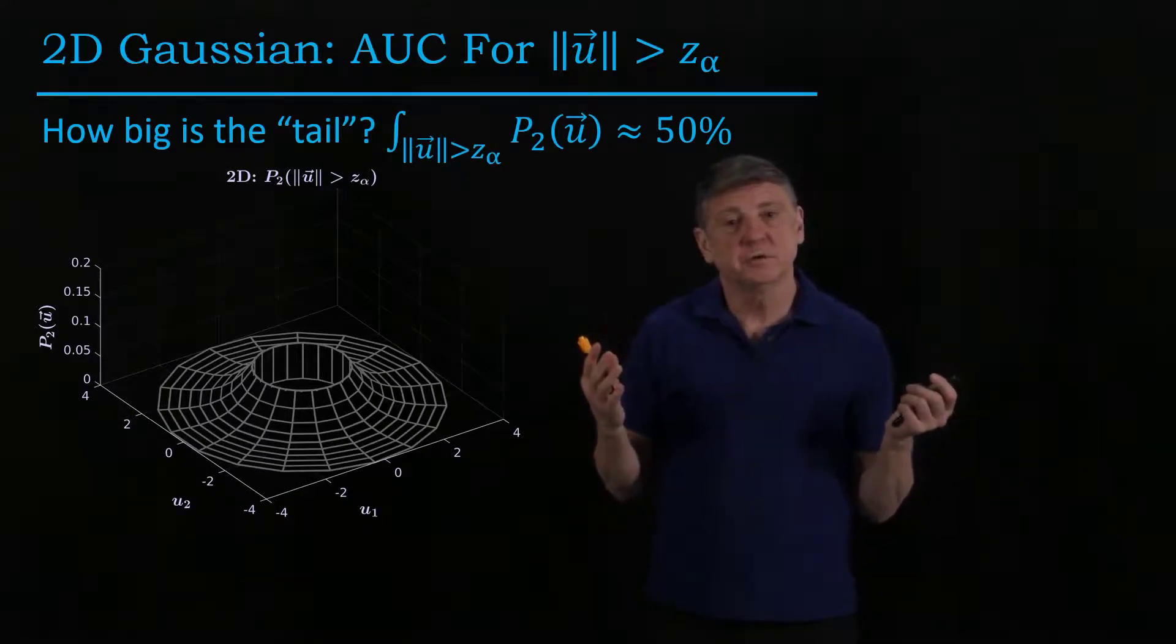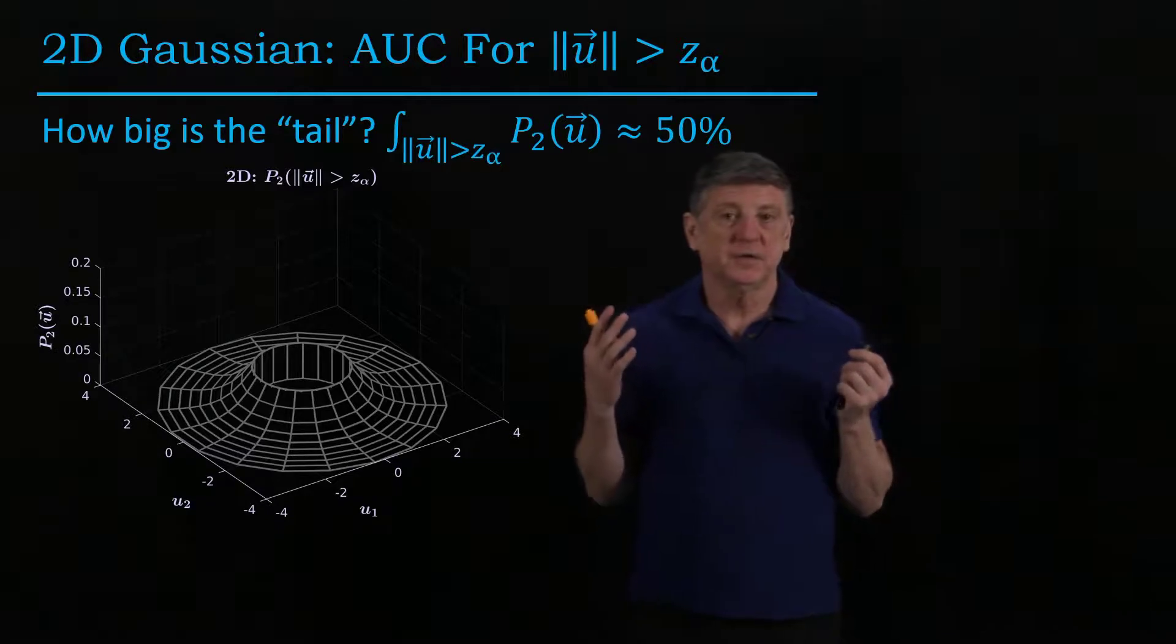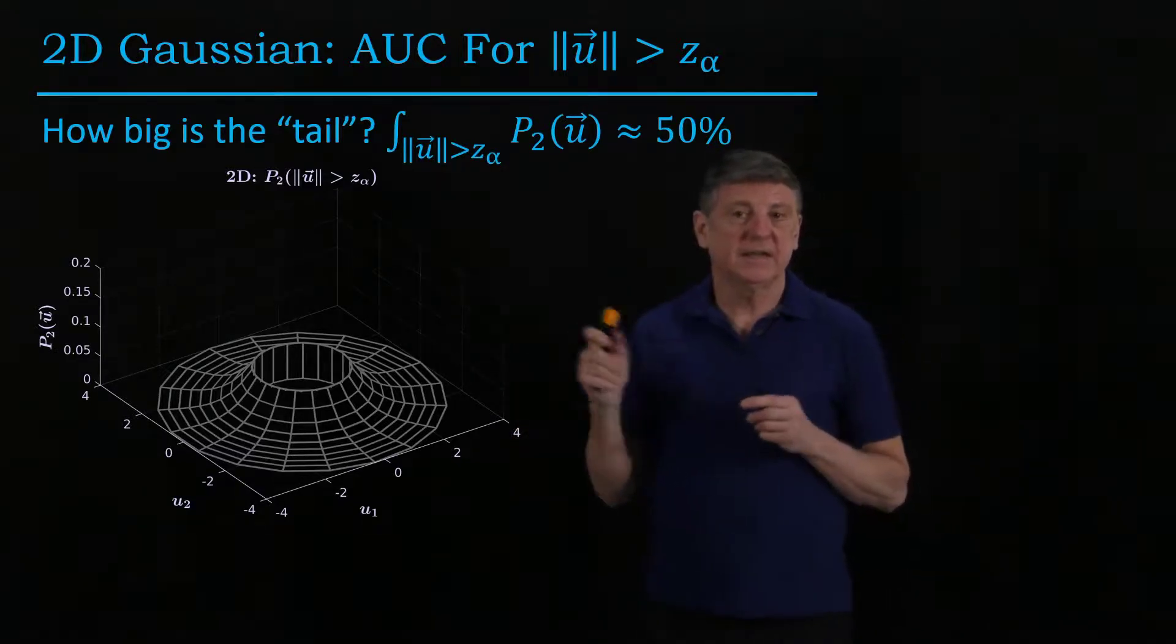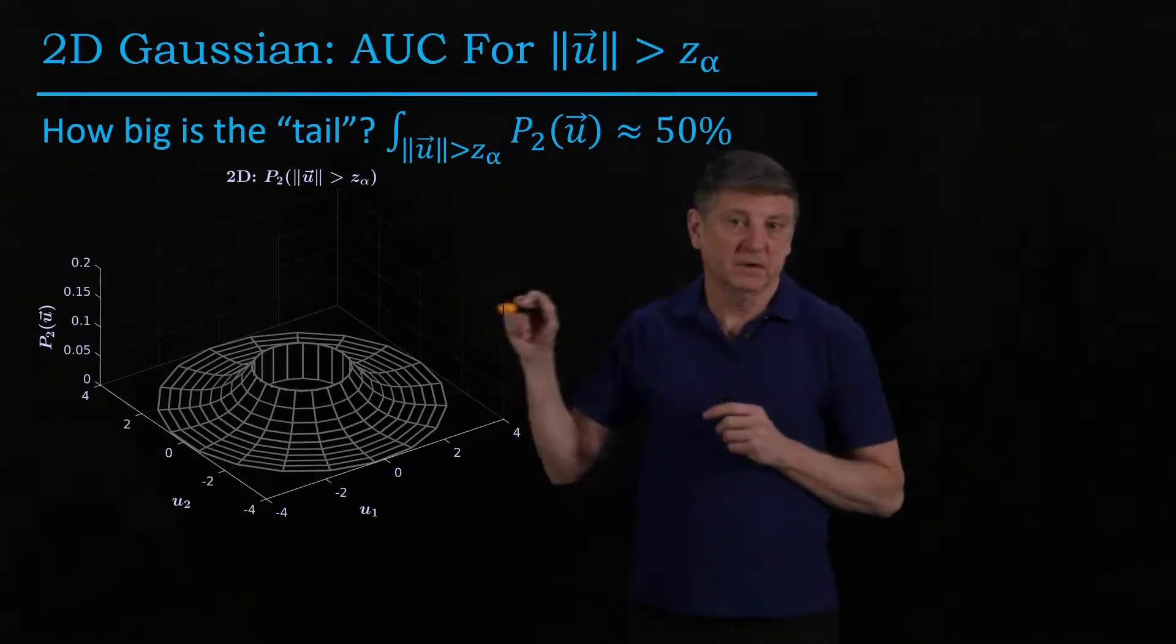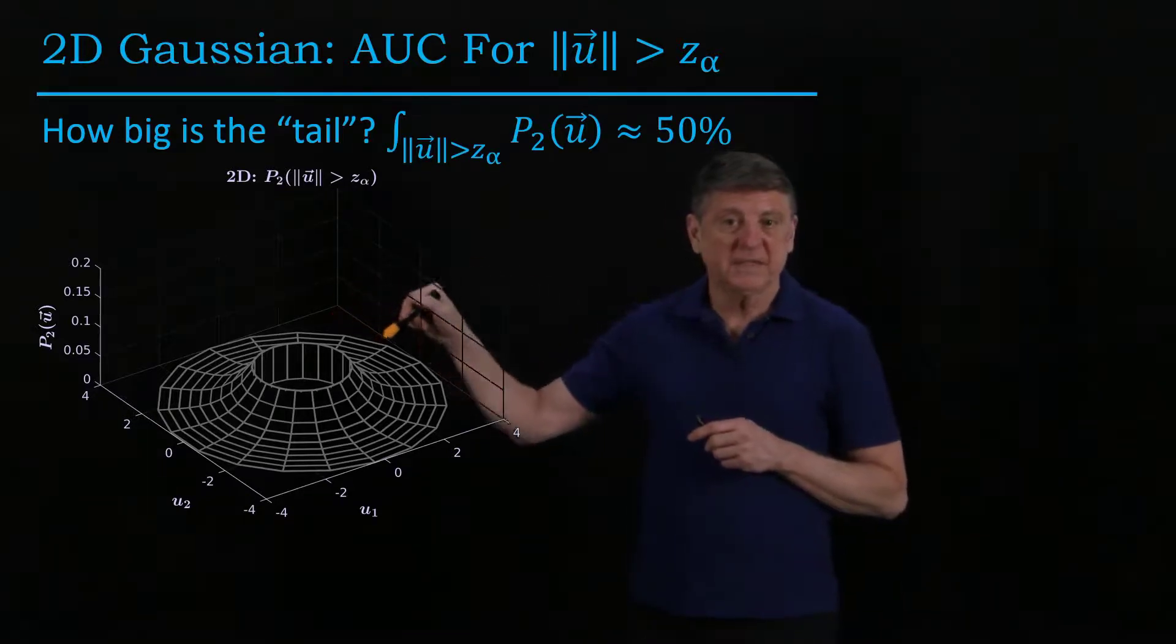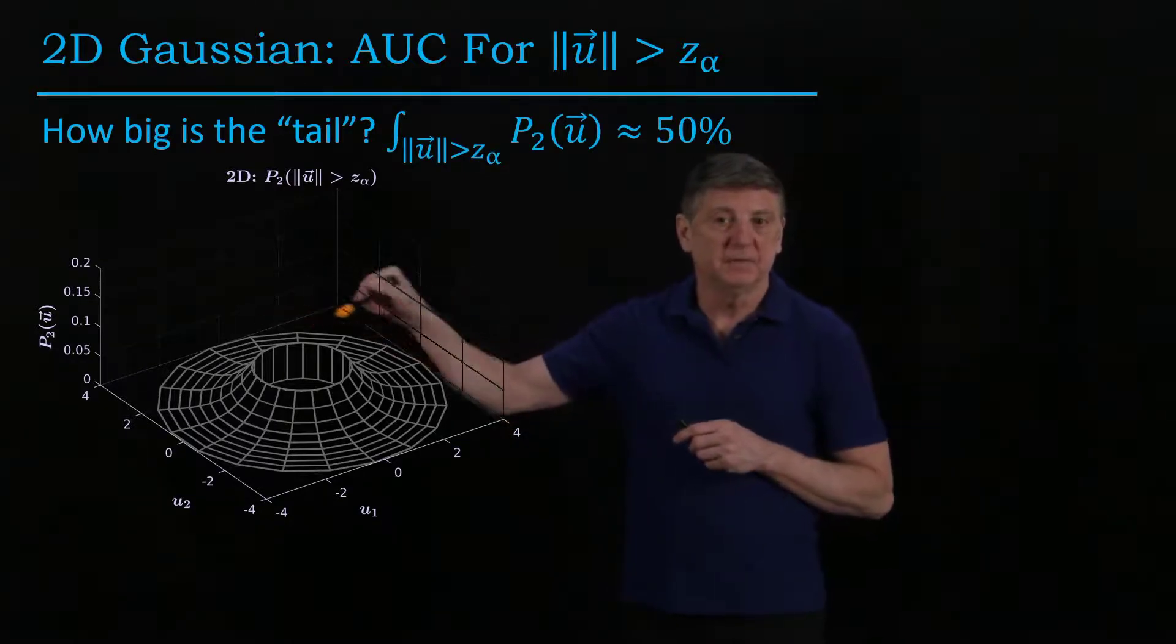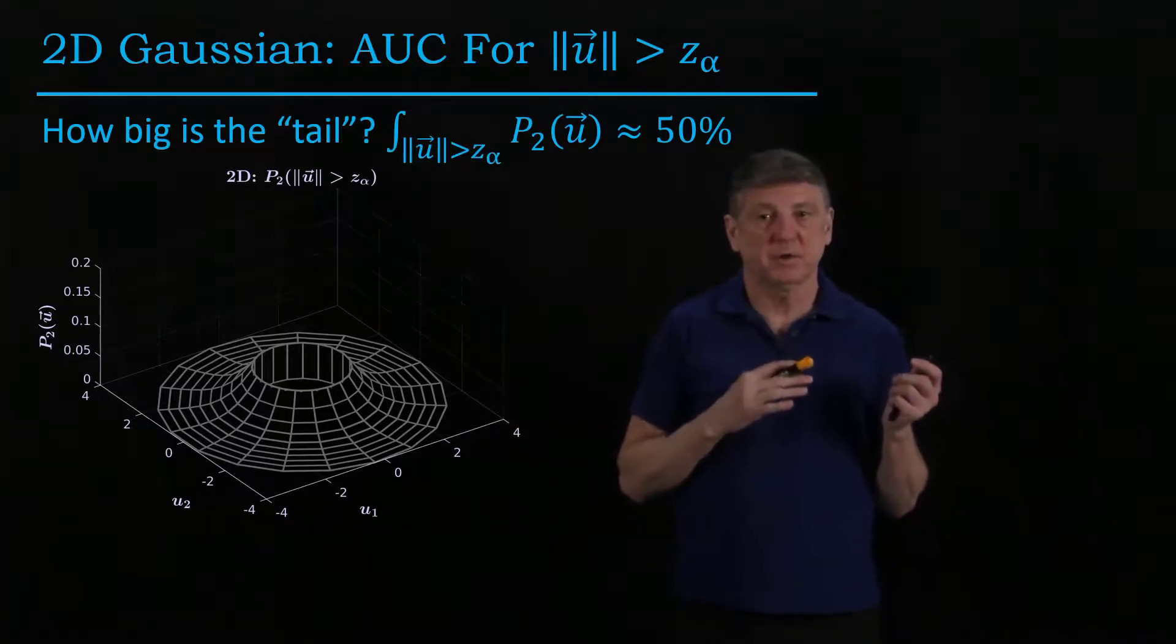So now what we can do is we can use MATLAB to visualize the volume under the bell shape that has a probability greater than one half. So what that means is that this is the shape of the volume that contains the non-central part of the data.